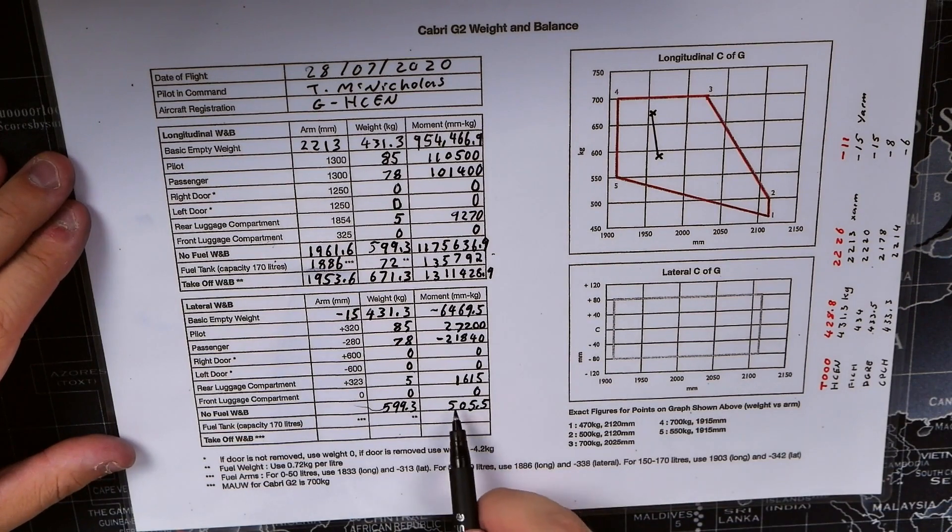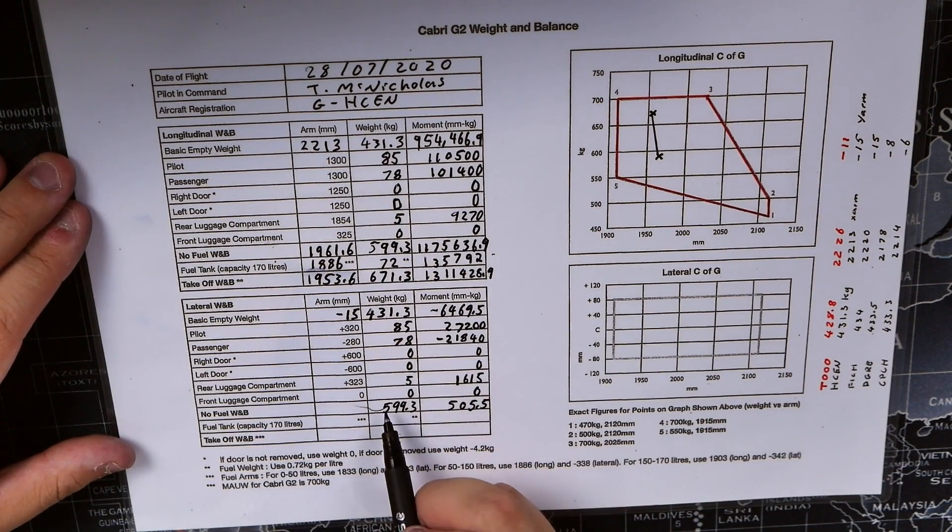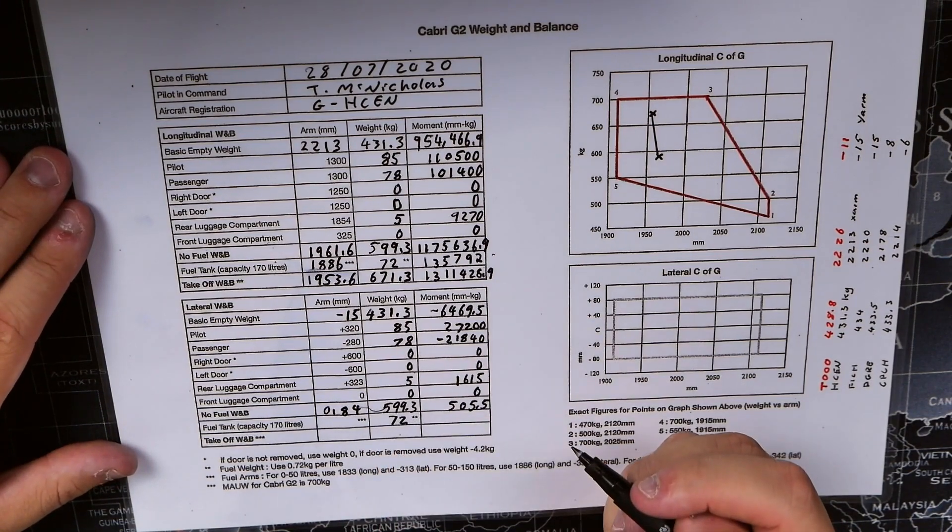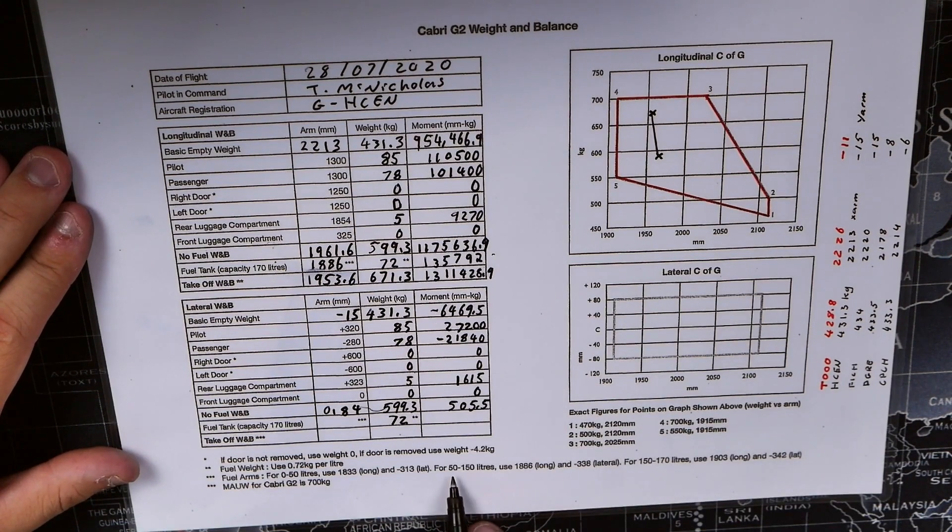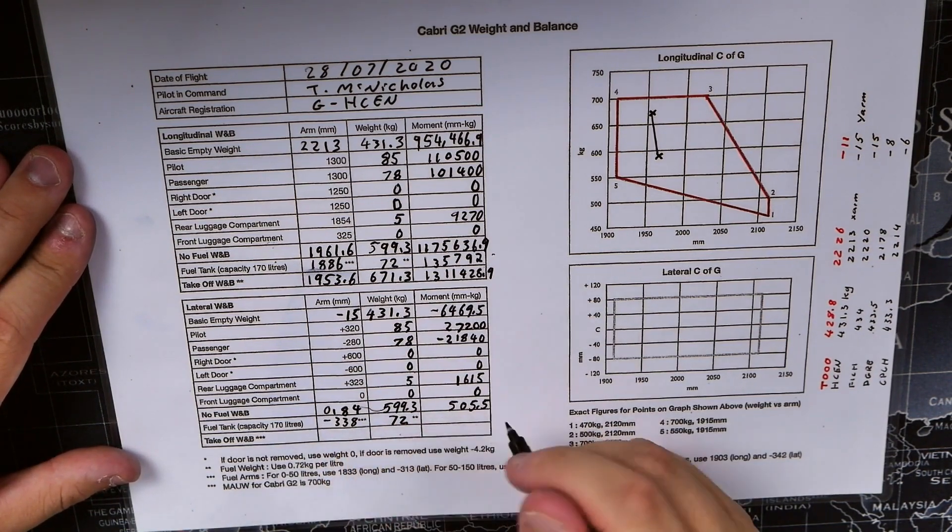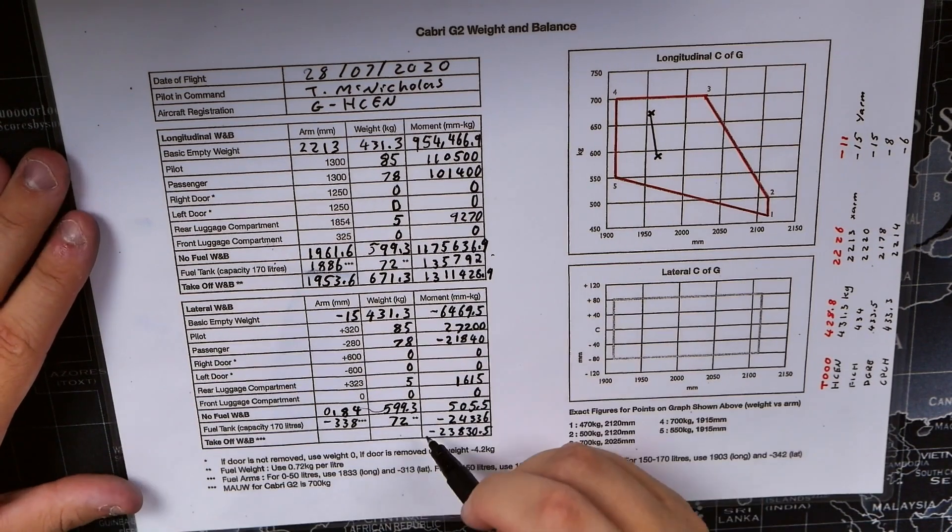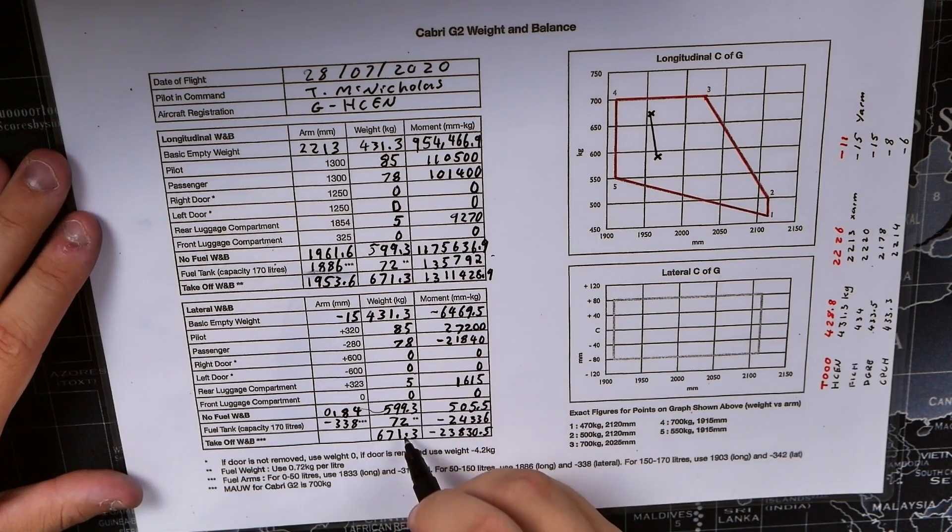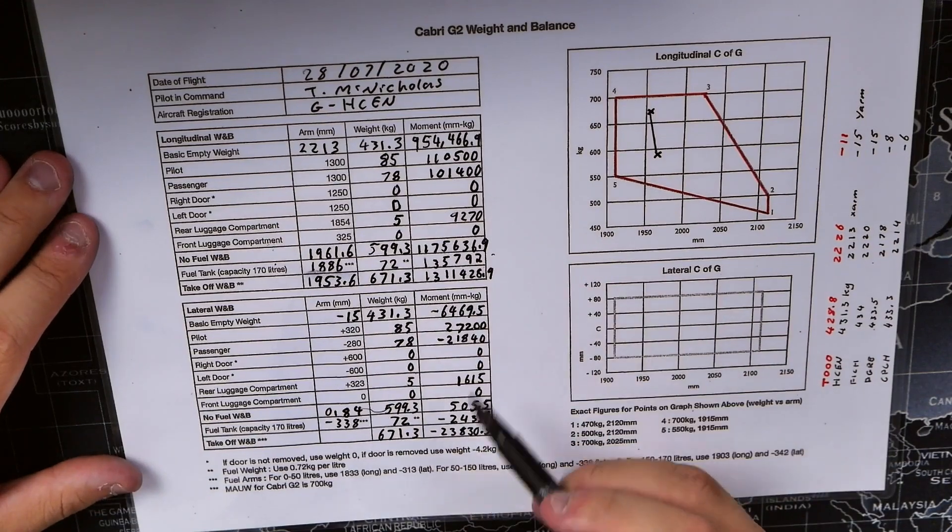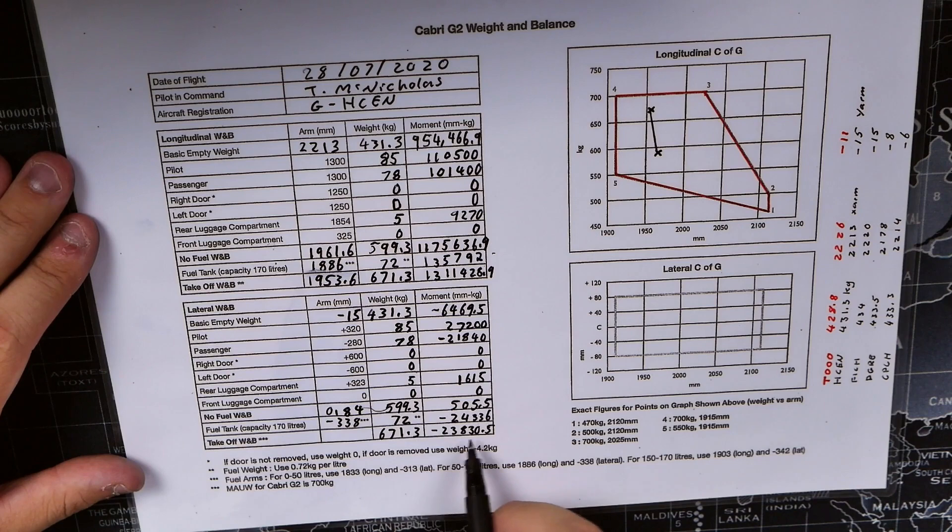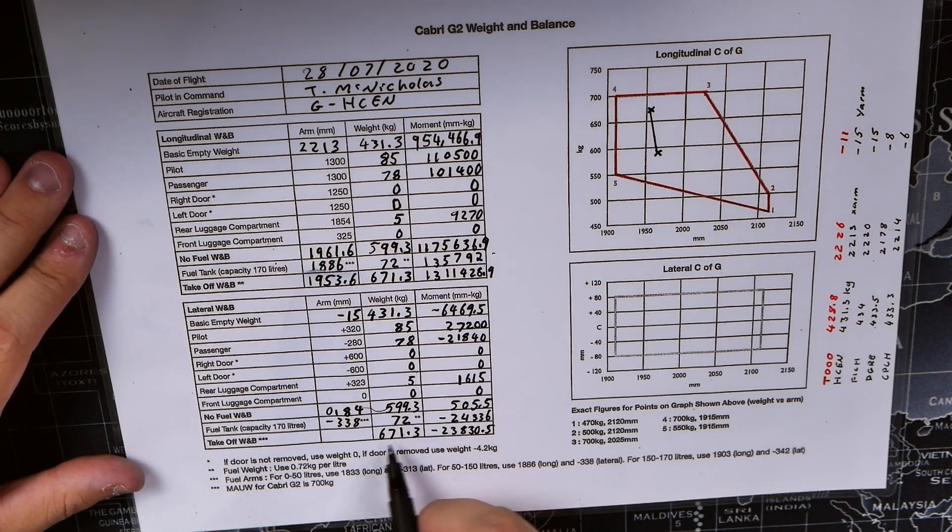It's just a simple matter of dividing the total moment with no fuel by the total weight with no fuel. We fill in our fuel values—72 kilograms of fuel on board. Between 50 and 150 liters we use for the lateral arm minus 338, and we times those two together to get minus 24336. Adding these together gives us 671.3 liters, which should match the value up above. We get the final lateral arm of the aircraft when fully fueled and loaded by dividing total moment by total weight, which gives us minus 35.5.